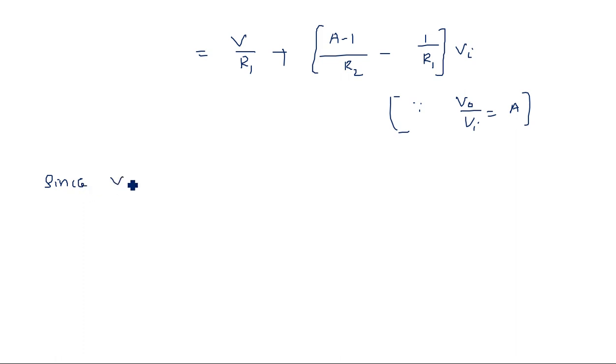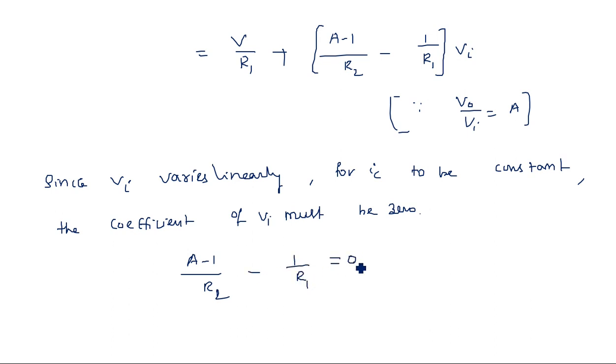for Ic to be constant, the coefficient of Vi must be zero. That is, (A minus 1) by R2 minus 1 by R1 equals zero.